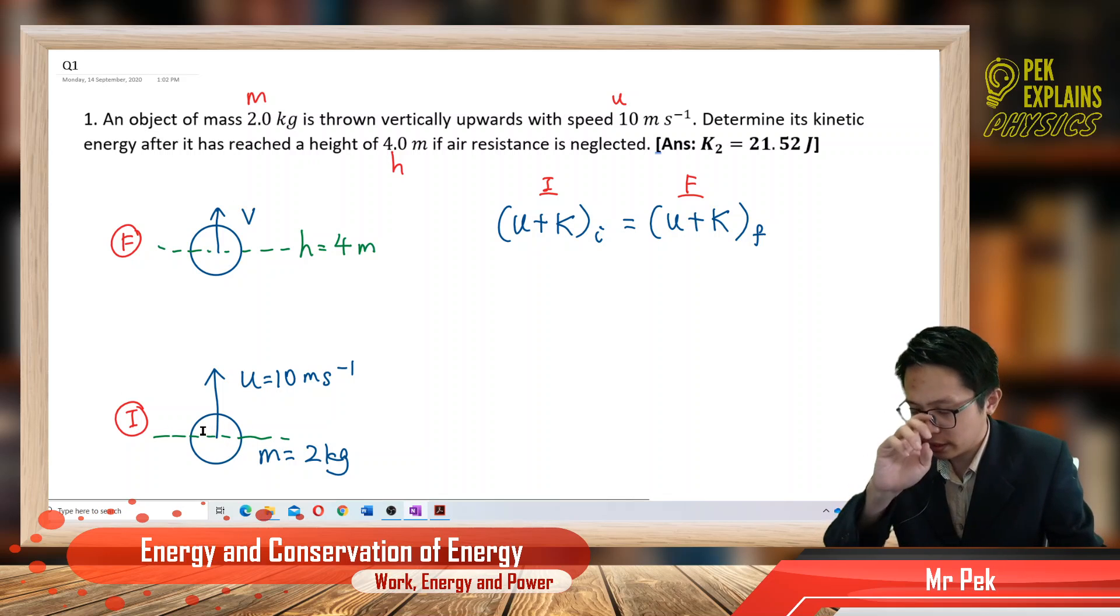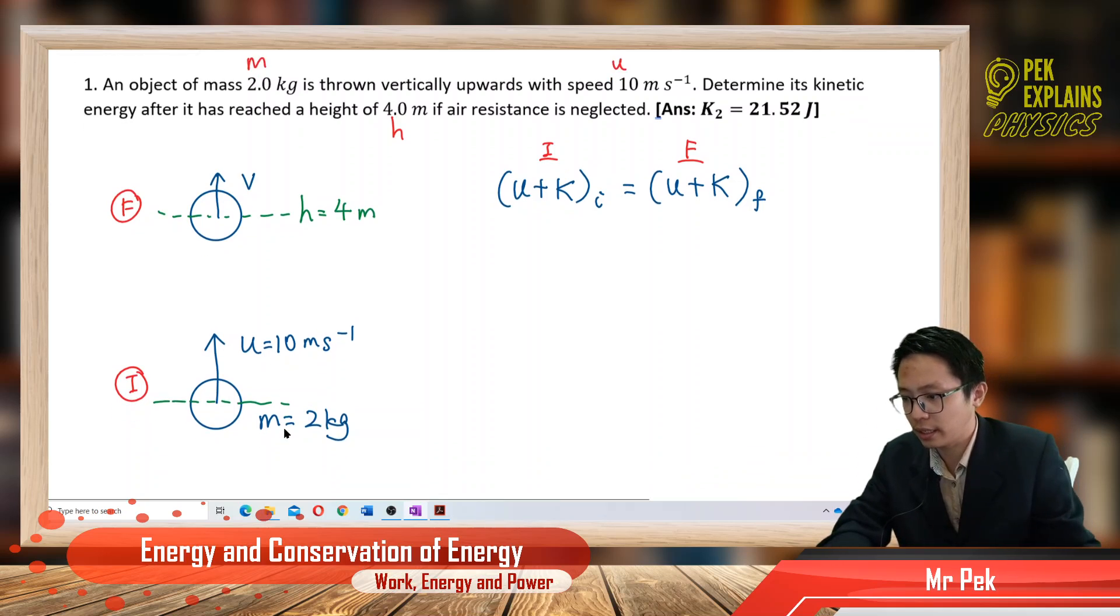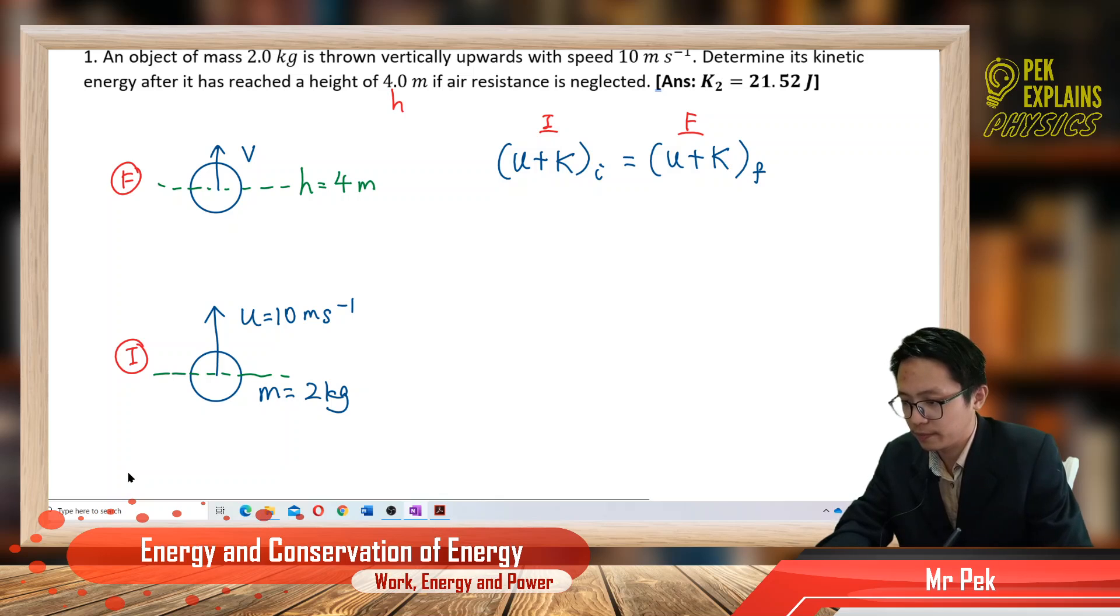So initially, what kind of energy it has? Initially it has the kinetic energy. Initially it has kinetic energy because it has certain speed.